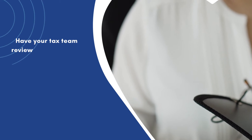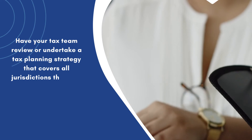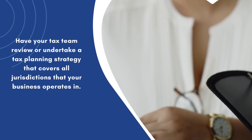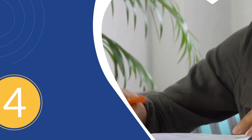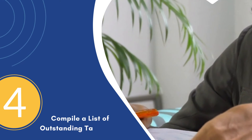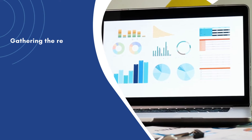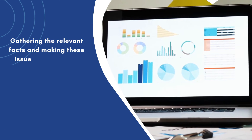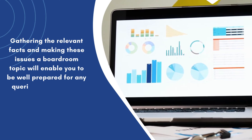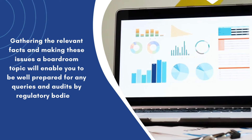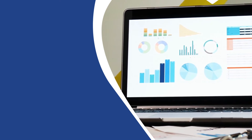Step 3: Be aware of tax risks in every jurisdiction. Have your tax team review or undertake a tax planning strategy that covers all jurisdictions your business operates in. Step 4: Compile a list of outstanding tax issues. Gathering the relevant facts and making these issues a boardroom topic will enable you to be well prepared for any queries and audits by regulatory bodies.